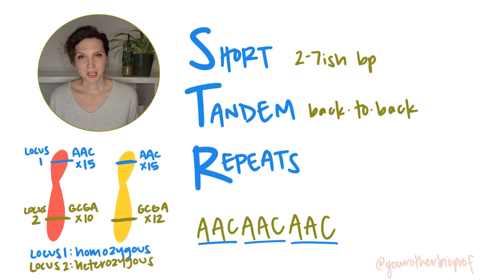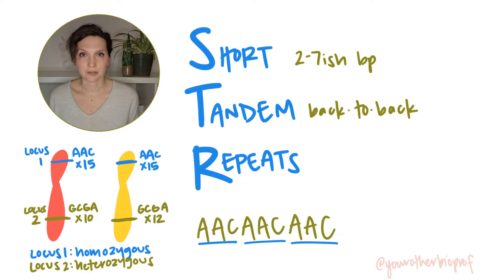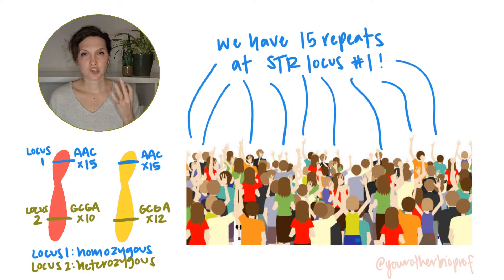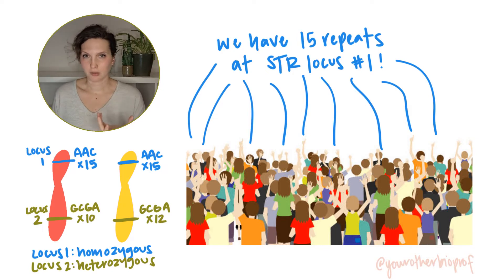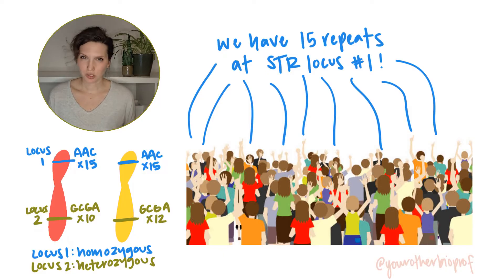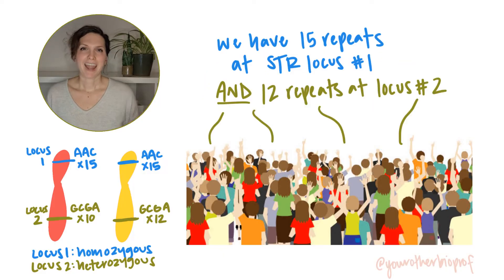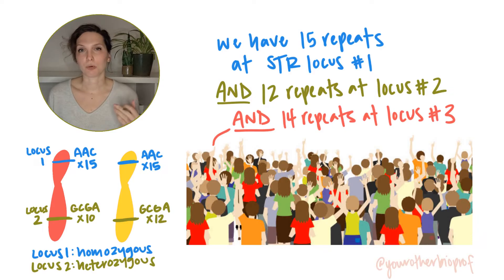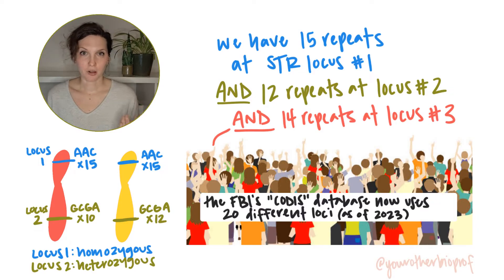There's a lot of variation in the number of repeats — the number of alleles — so we can work with that. The chance that you'd share the same number of repeats at a given locus with any random person isn't huge, but by adding more and more loci to our analysis, we can get more specific and generate a DNA profile of an individual person.